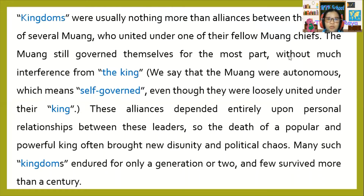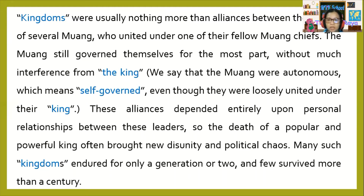Kingdoms were usually nothing more than alliances between the leaders of several Muang who united under one of their fellow Muang chiefs. The Muang still governed themselves for the most part without much interference from the king — we say that Muang were autonomous, meaning self-governed — even though they were loosely united under the king. These alliances depended entirely upon personal relationships between these leaders, so the death of a popular and powerful king often brought new disunity and political chaos.